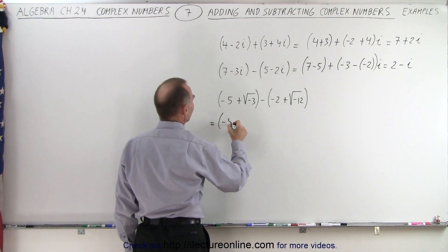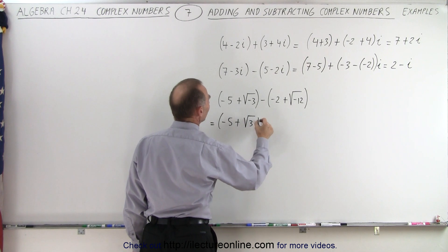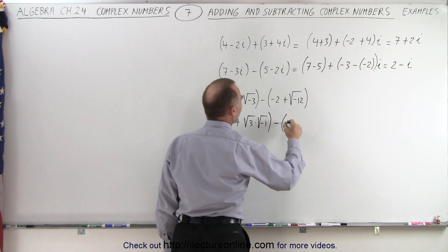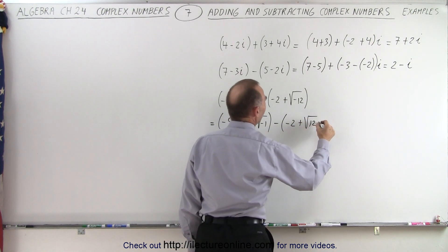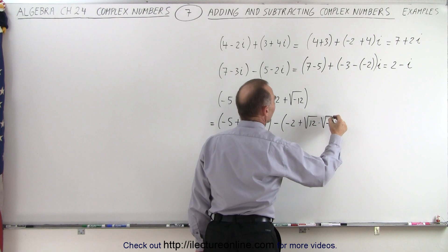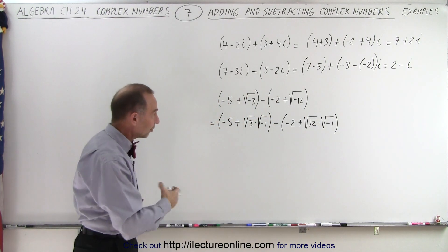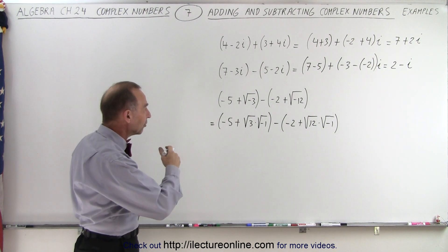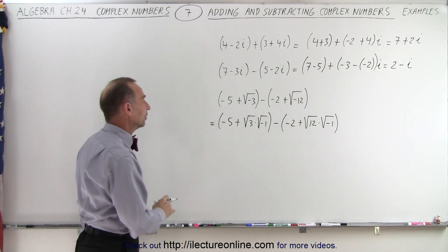that would be minus 5 plus the square root of 3 times the square root of negative 1, minus minus 2 plus the square root of 12 times the square root of negative 1. And so that's how we're able to separate the radicals in such a way that we can separate the i from the radical.